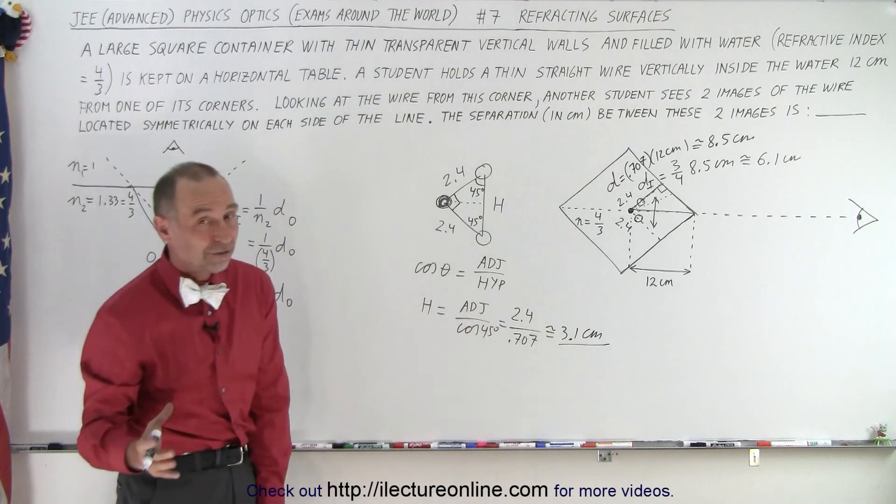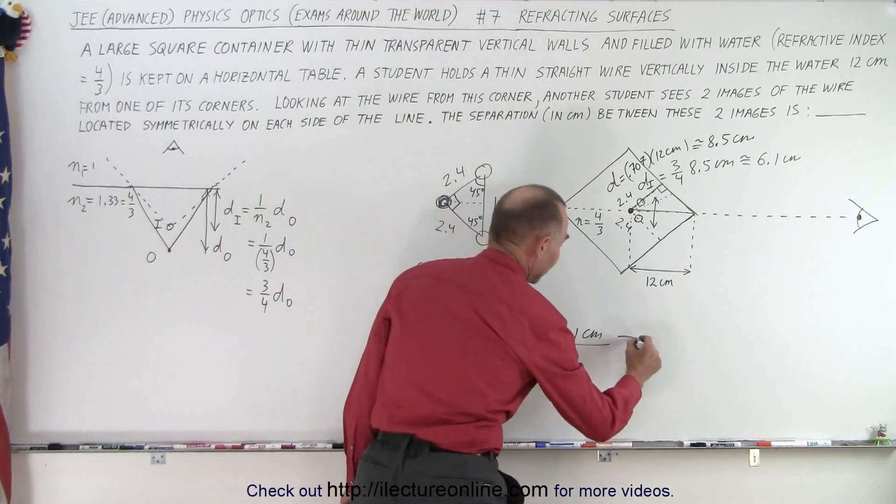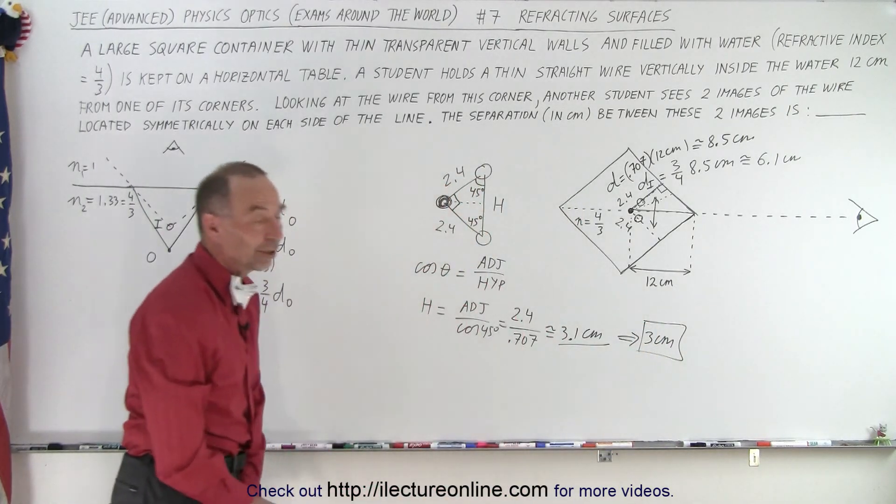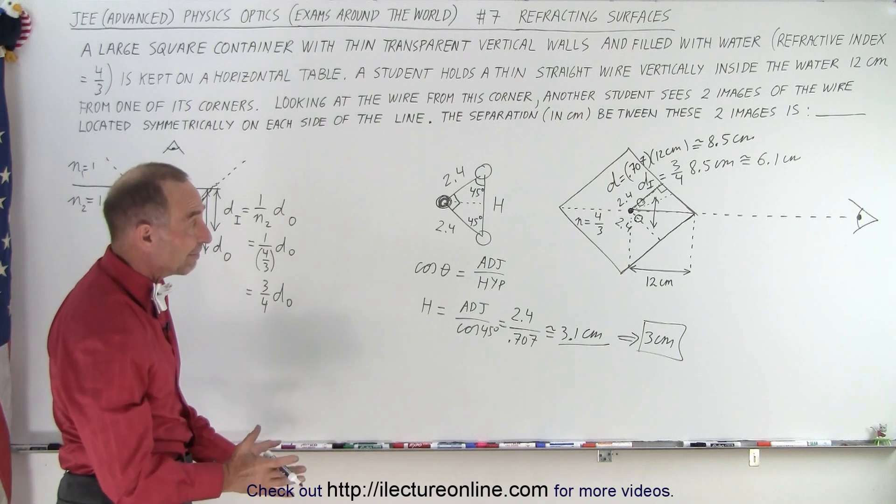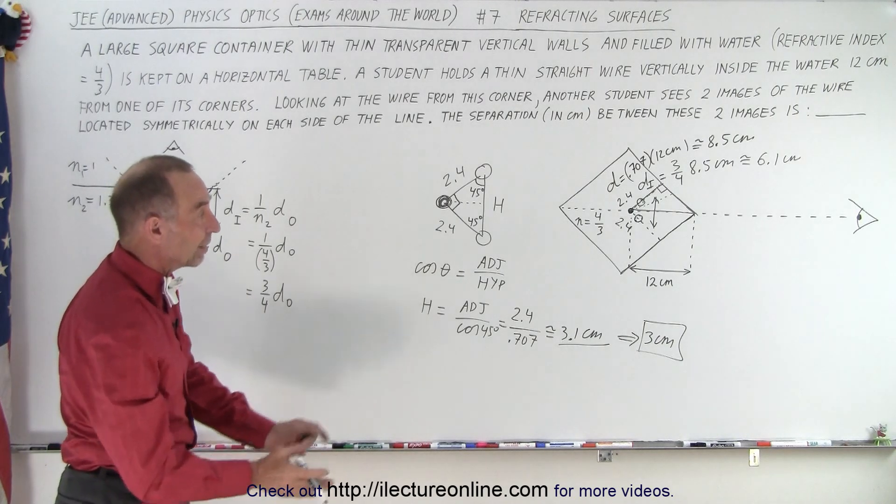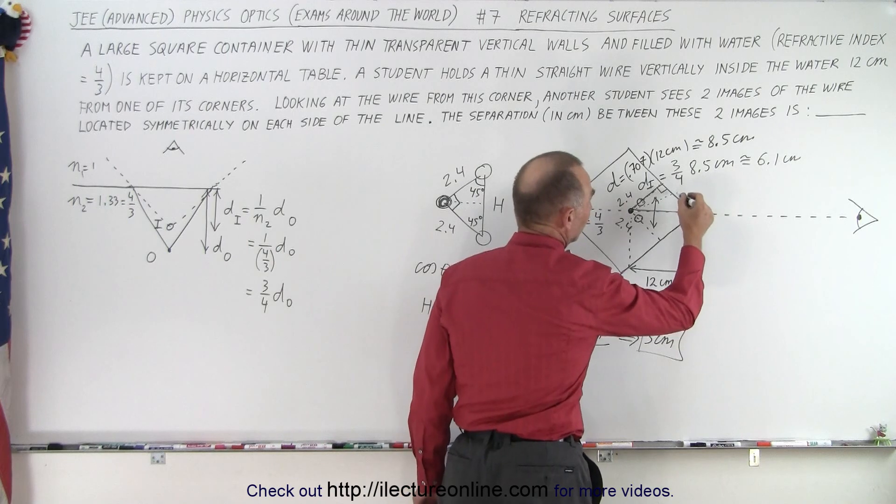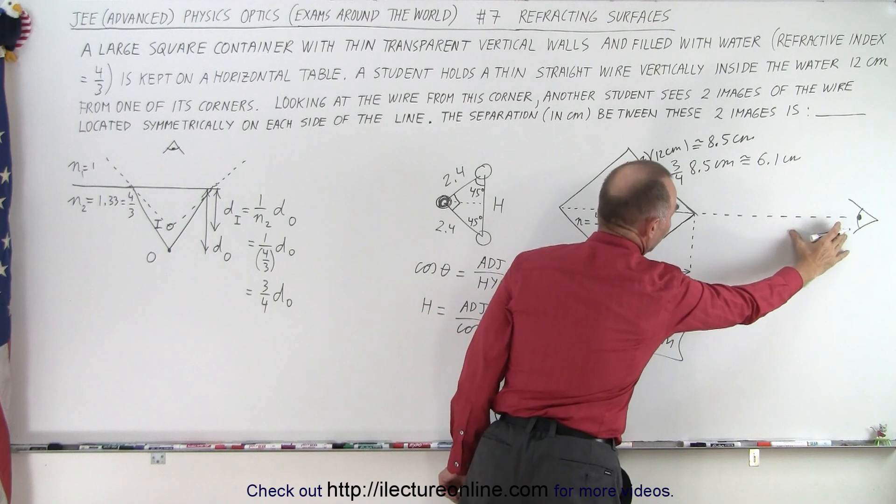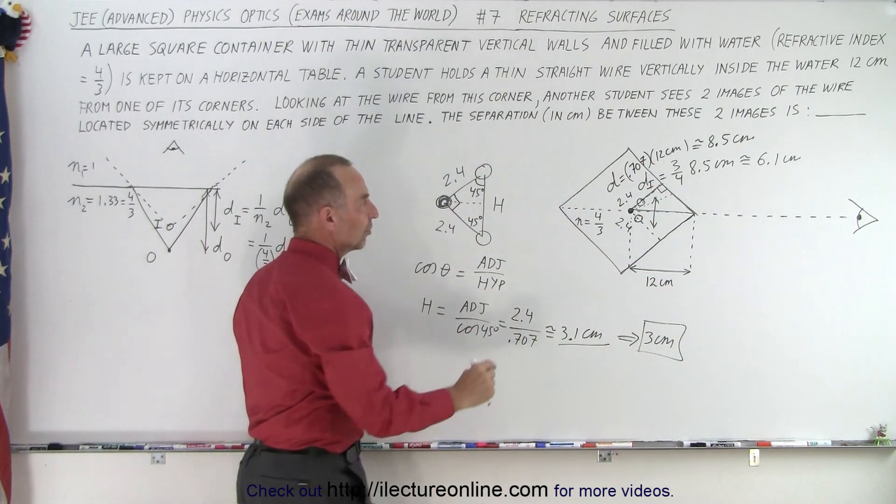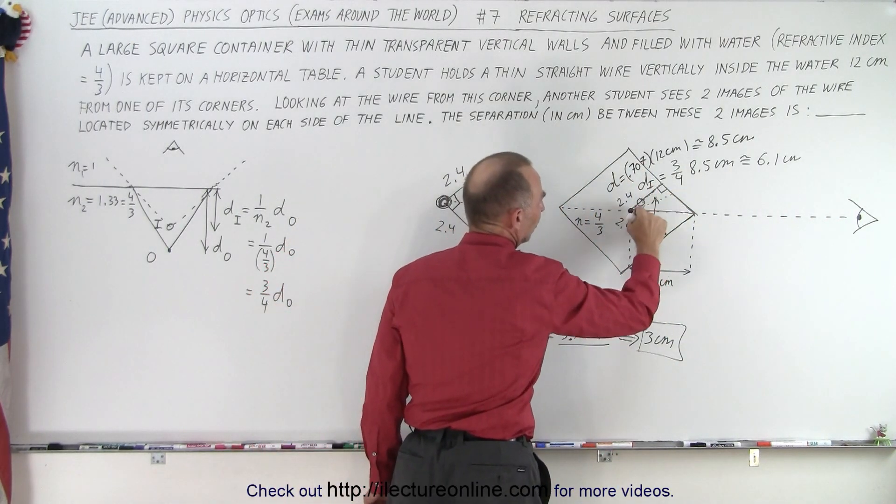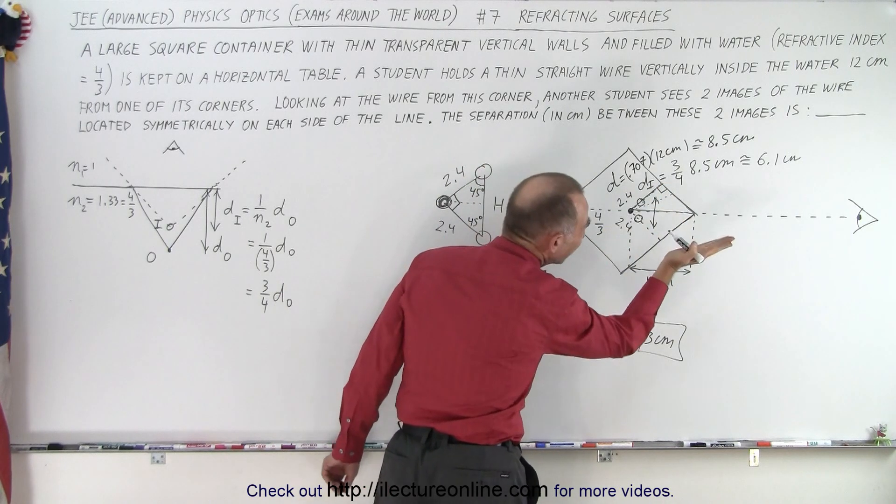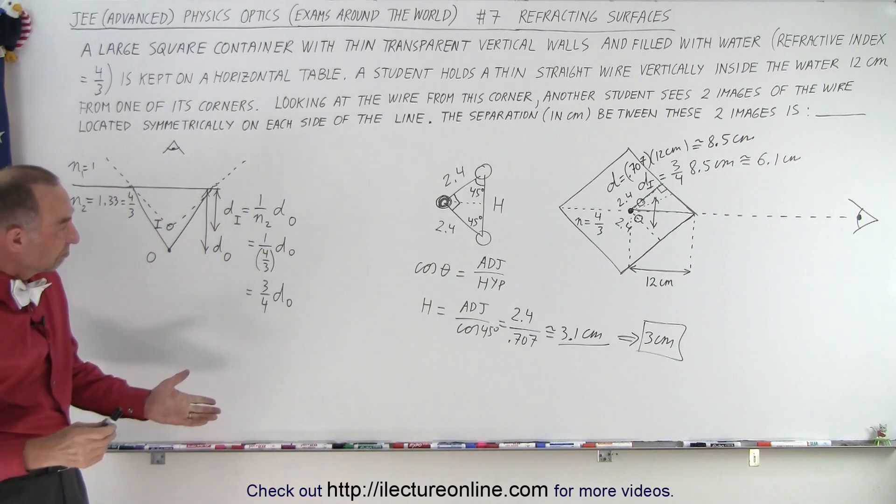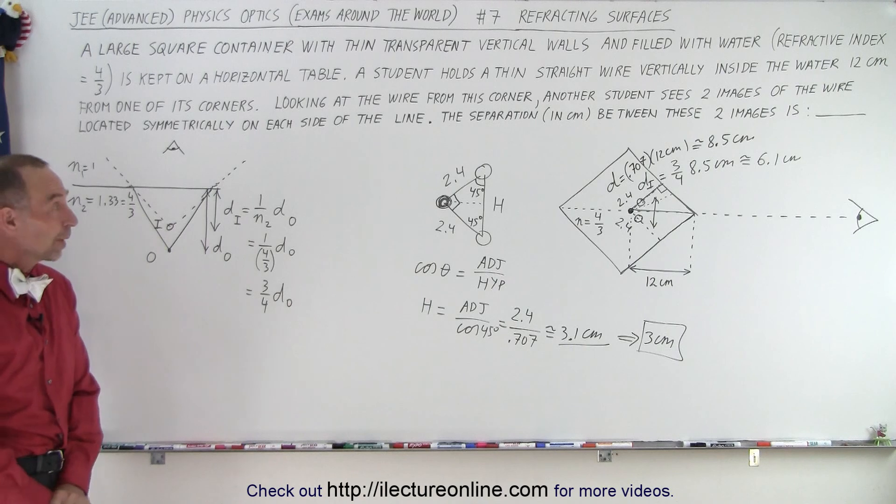Rounding that off to the nearest centimeters, you could say that that would be a distance of about 3 centimeters, and that's the answer that I would put down. Because I don't have any other way of finding the answers by trying to draw the rays without knowing where the observer is. I just keep it at this point, and say 3 centimeters is my answer, and it turns out that's one of the acceptable answers to this problem. That's how I would do the problem.